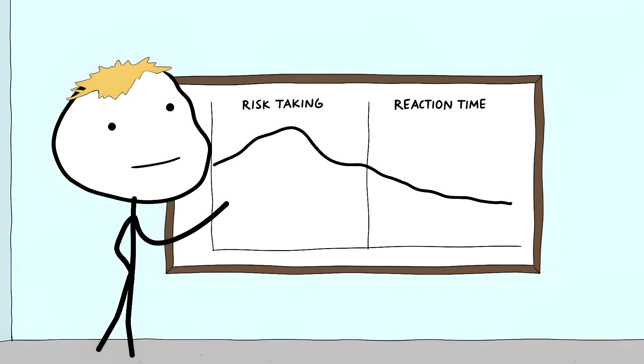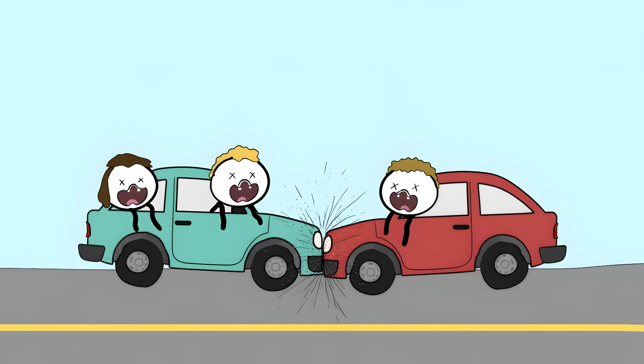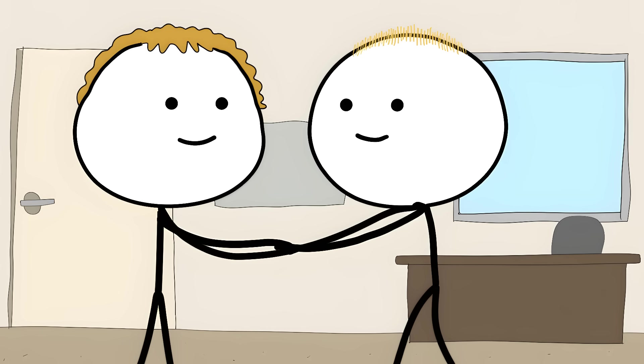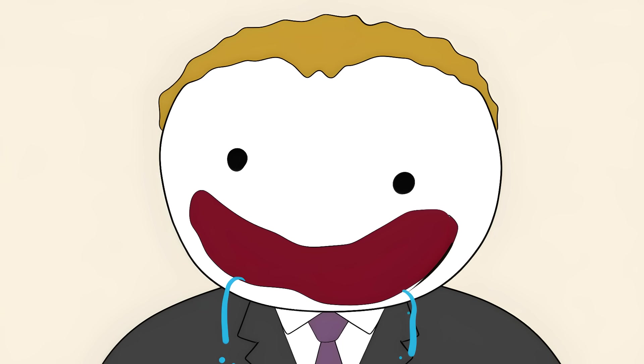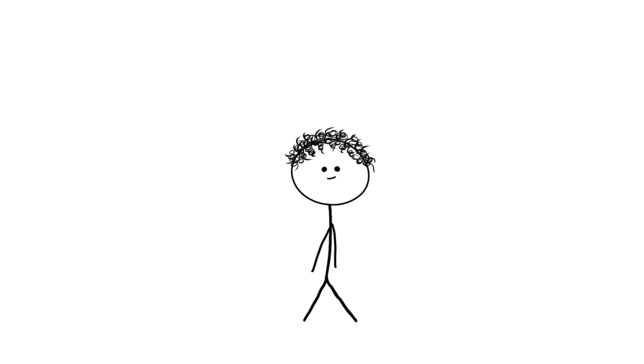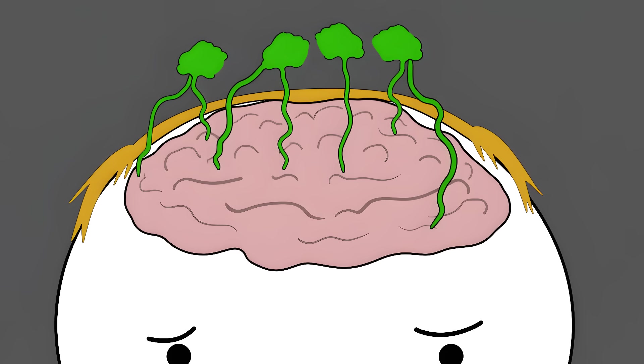Scientists have found that infected people take more risks and have slower reaction times. They're more likely to get into car accidents. They're also more likely to start businesses. So maybe some of those successful entrepreneurs aren't brilliant. Maybe they just have a brain full of cat parasites making them take risks. And this parasite is still evolving. Who knows what it might do to human brains in the future?